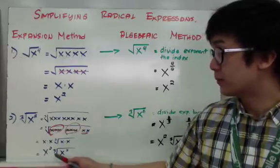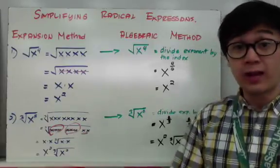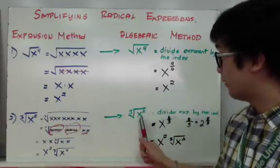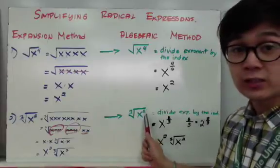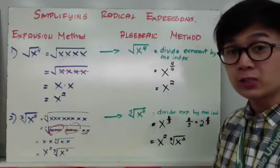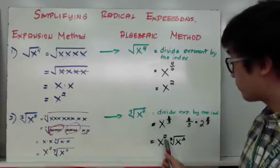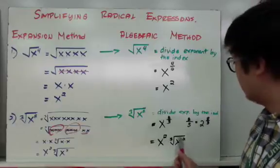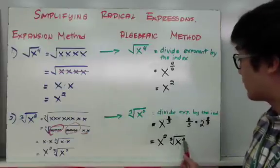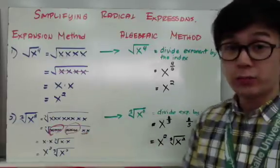The result is x squared times cubed root of x squared, because the two leftover x's cannot be simplified further. Algebraically, changing the radical to a fractional exponent gives x raised to 8 over 3. Converting 8/3 to a mixed number gives 2 and 2/3 — the 2 is the exponent outside the radical and 2/3 gives x to the 2/3 inside, confirming x squared times cubed root of x squared.